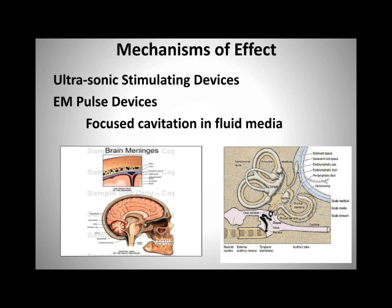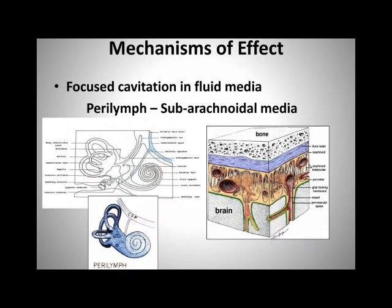There are a number of different ways this communication can happen. If we're looking at something like an ultrasonic stimulating device or an electromagnetic pulse device, the idea of focused cavitation in the fluid media is conducted within the ear, and by making it conductive within the ear it can then communicate to the brain space through several mechanisms. One is perilymph — the fluid that is the medium of conductance within the inner ear, in which the entirety of the inner ear is bathed — the fluid medium by which balance, positional rotation, and hearing signals are propagated.